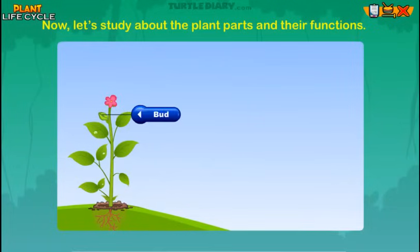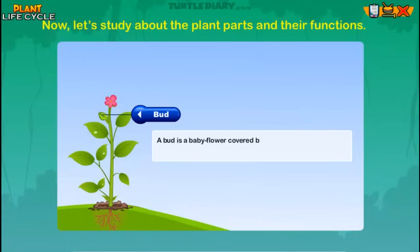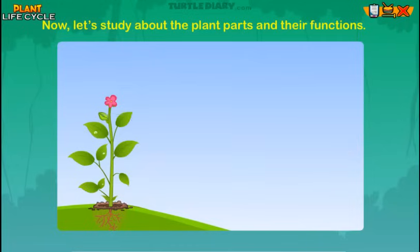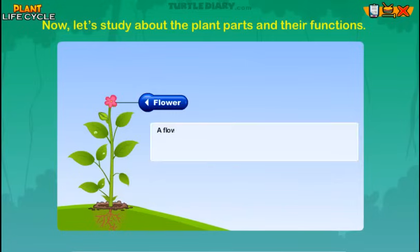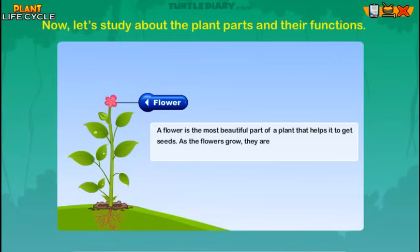A bud is a baby flower covered by special leaves. These buds open up and become flowers. A flower is the most beautiful part of a plant that helps it to get seeds. As the flowers grow, they are pollinated and become fruits. In these fruits, we can find the seeds of the plant.